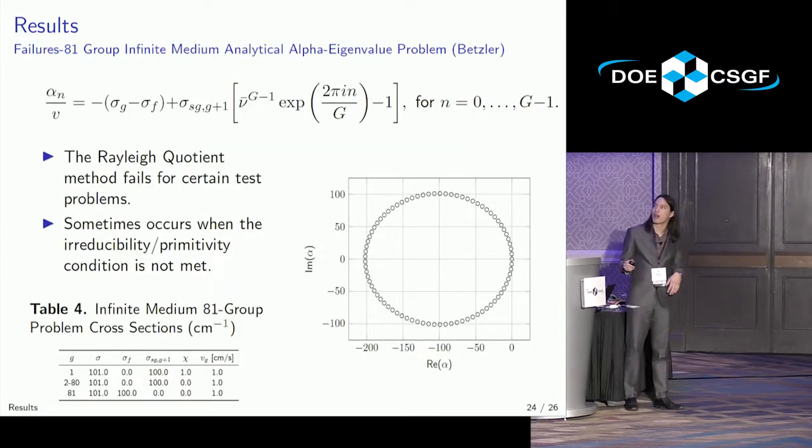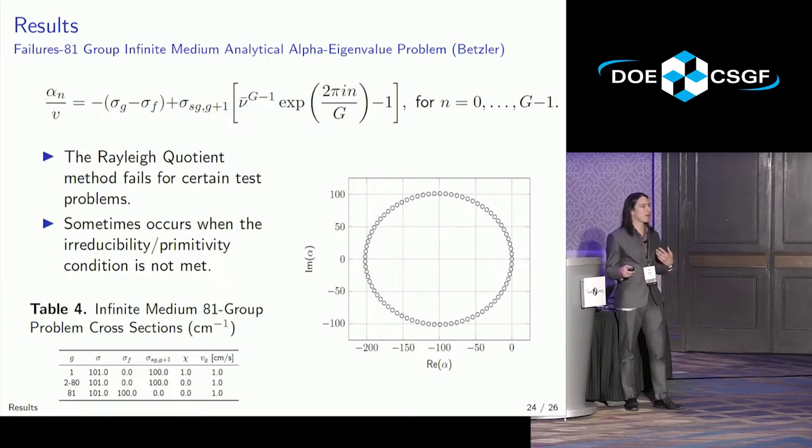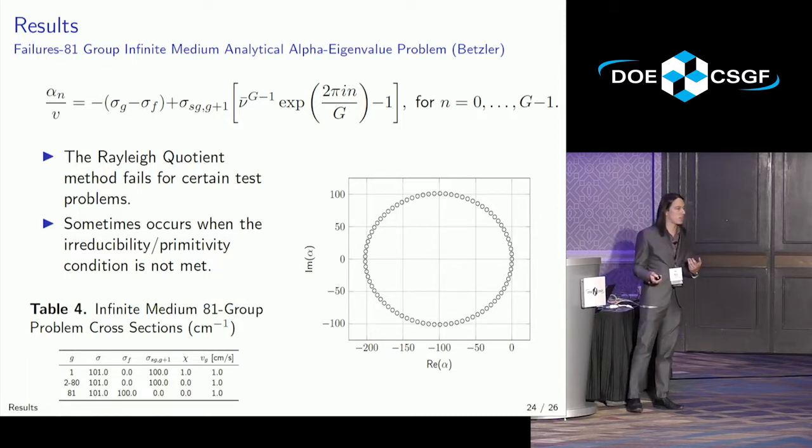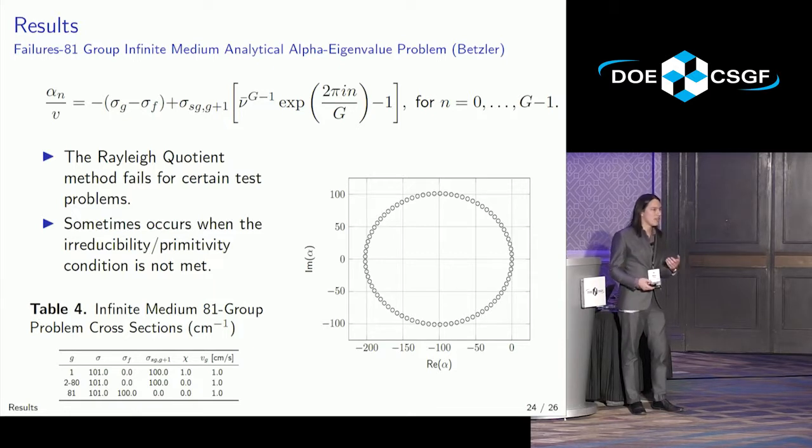On my last slide, I do want to talk about failure, because one of the more interesting things about methods is when do they fail. From the literature, there was this method where all the alpha eigenvalues are on a unit circle. So in this particular case, the cross sections aren't physical. What happens is the Rayleigh quotient method actually cycles through every single alpha eigenvalue with a period of 81. Well guess how many energy groups this particular problem has. This is infinite medium with no angular dependence, so it's only a function of energy. There's 81. So the condition of primitivity is important, though not necessarily sufficient as we've shown in other cases.